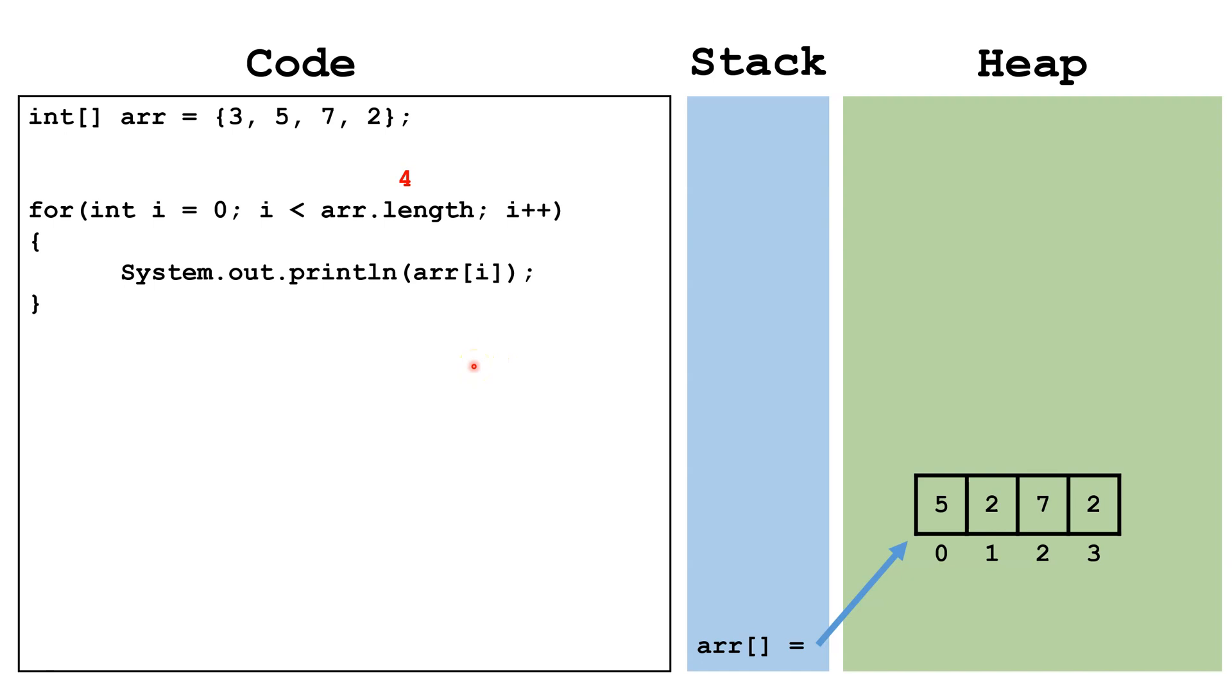Now let's look at a common problem people have when writing this code. People sometimes write less than or equal to which means i will get all the way up to 4 which will give us an array index out of bounds exception. So you want to make sure i never gets too high or too low.